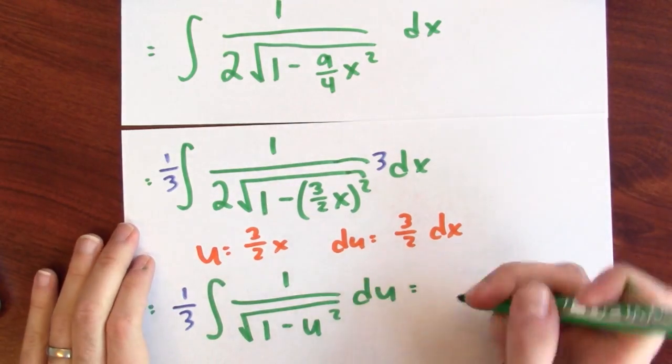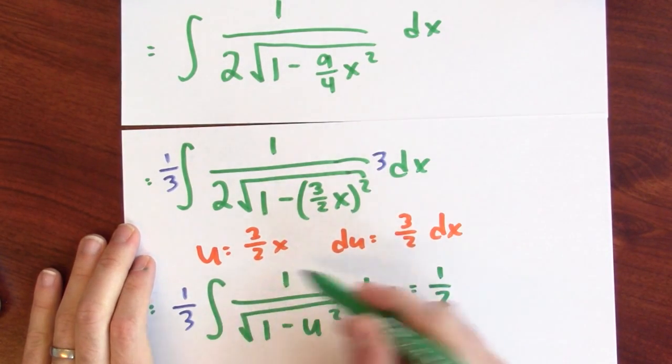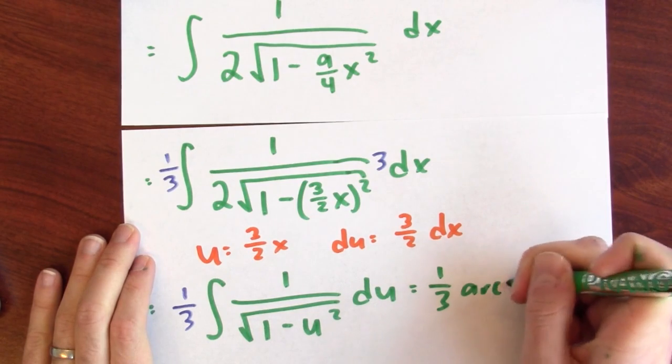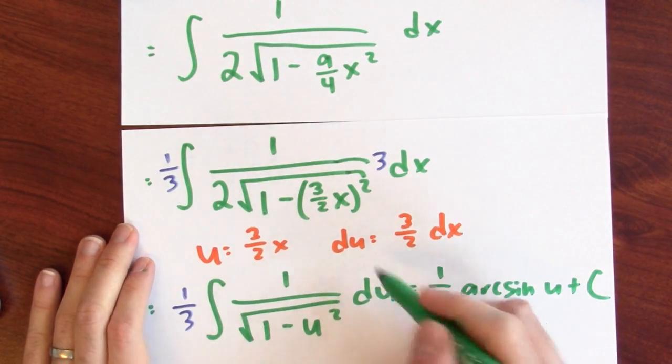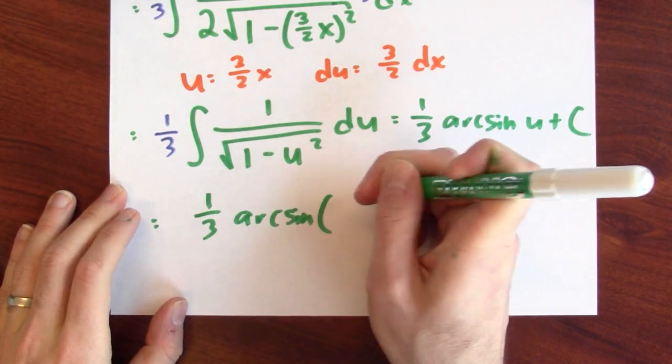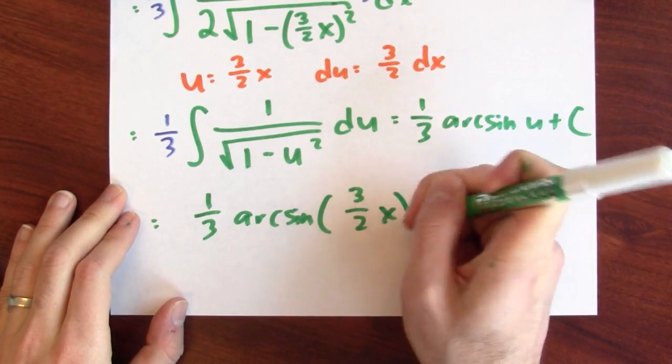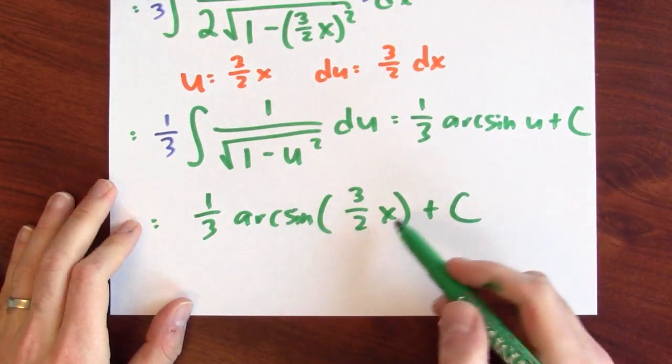Why is this a good idea? Well, this is a good idea because this is now 1 third and I know something which differentiates to this. Arc sine u is the anti-derivative of this. To finish this, I'll replace u by 3 halves x. So I get that this is 1 third arc sine of 3 halves x plus c. This is just because u is 3 halves x.